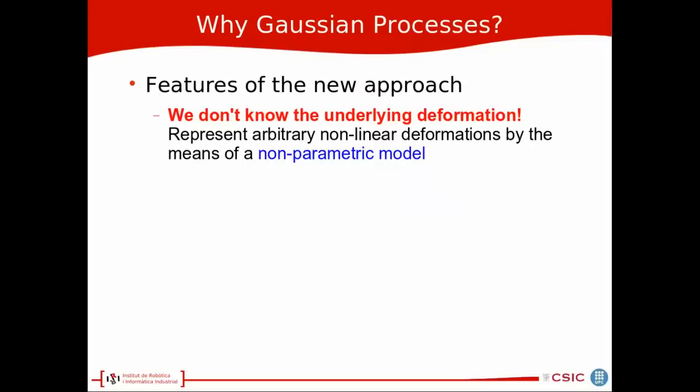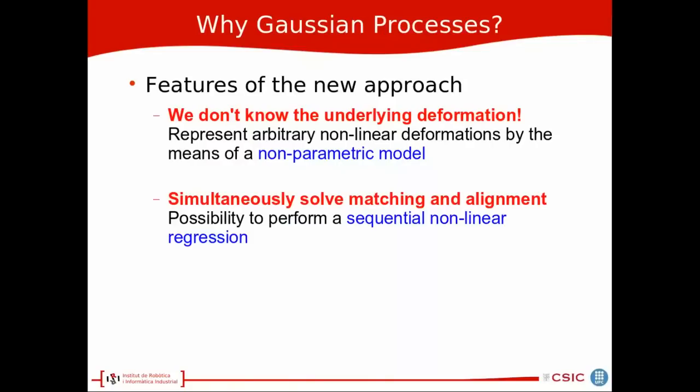So why Gaussian Process? In the new problem, we don't know the underlying deformation, so we want to represent arbitrary nonlinear deformations by means of a nonparametric model. Then we also want to simultaneously solve the matching and alignment, and Gaussian Process gives us a possibility to perform a sequential nonlinear regression.